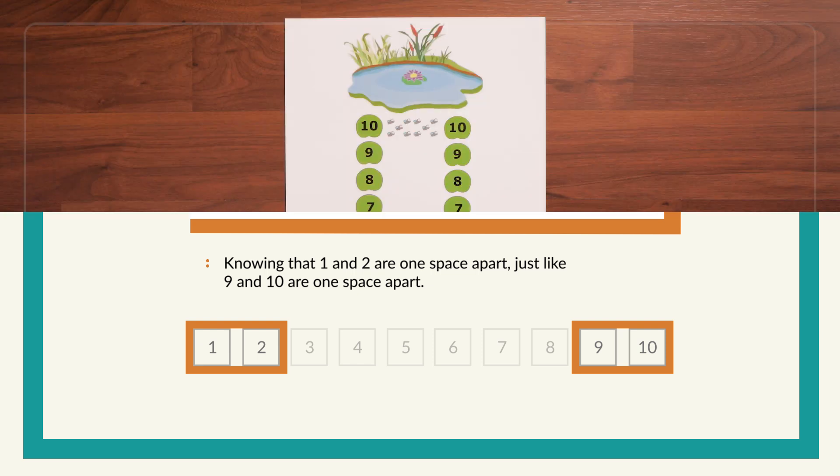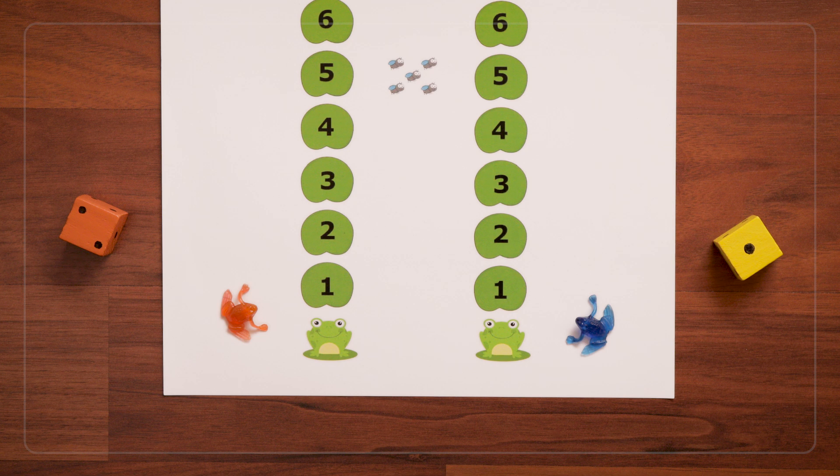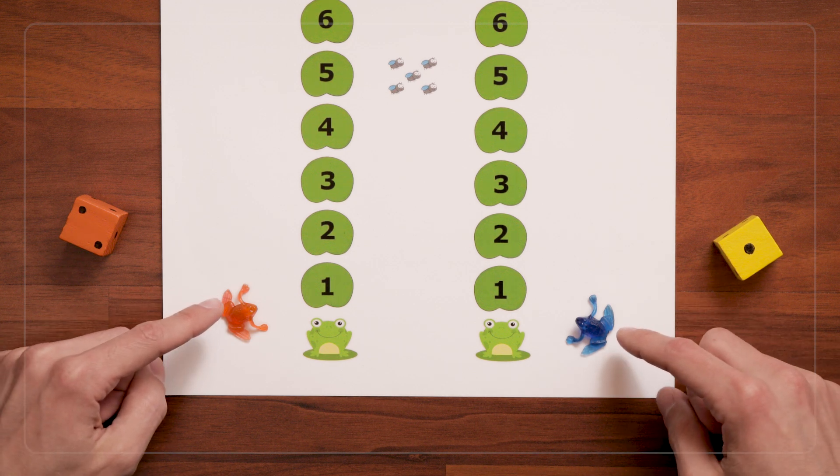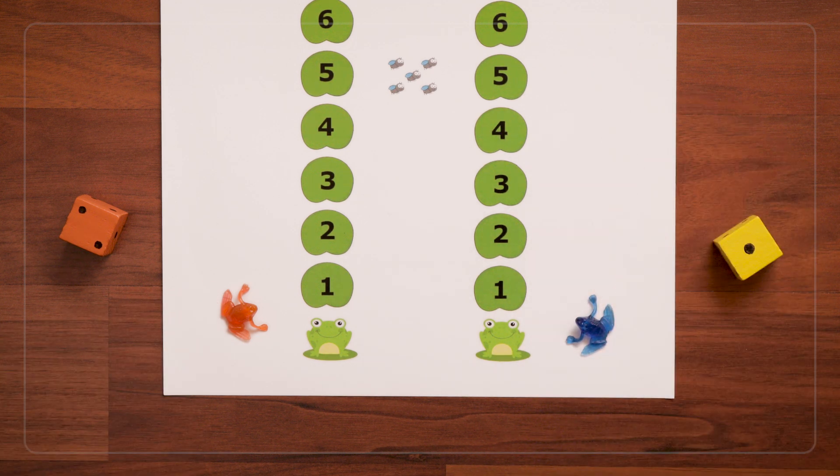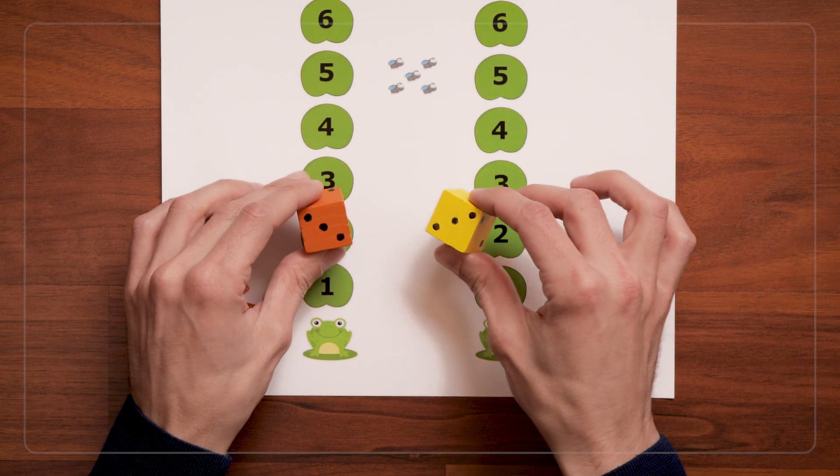So once kids are comfortable hopping 1 to 5, you can move on to the 1 to 10 board. And here I have slightly smaller frogs than before because they'll fit better on my board. For this you can continue with the 1 to 2 dice or use 1 to 3 dice.